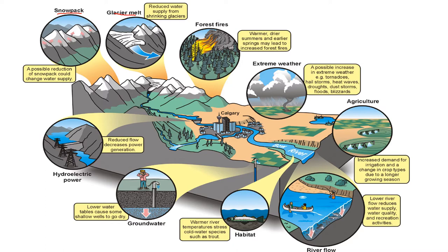Forest fires: we know from previous weeks that forest fires start when we've had a lot of very hot and dry weather and the wood really dries out — it almost becomes like kindling, a very dry wood you use to start a fire. So the risk of forest fires rapidly increases with the increase in global temperatures, and we saw that in Australia earlier this year.